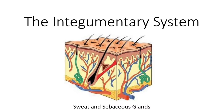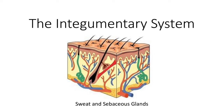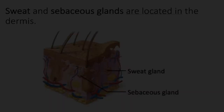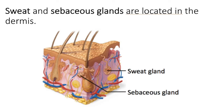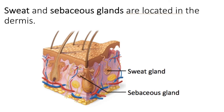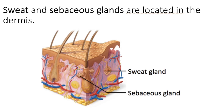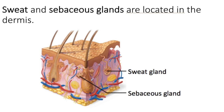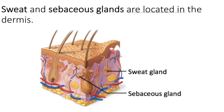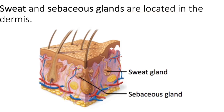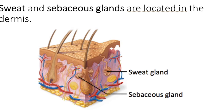In the dermis are glands. They are all exocrine glands. An exocrine gland produces a substance that enters into a duct, and that duct leads to a surface — in this case, the surface of the skin.